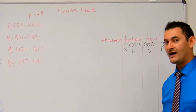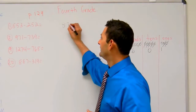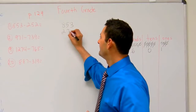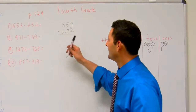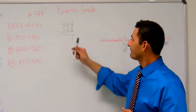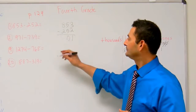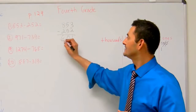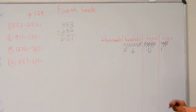Let's go ahead and do that problem in the standard algorithm. 853 minus 252. Three minus two is one. Five minus five is zero. Eight minus two is six. So the answer is going to be 601.